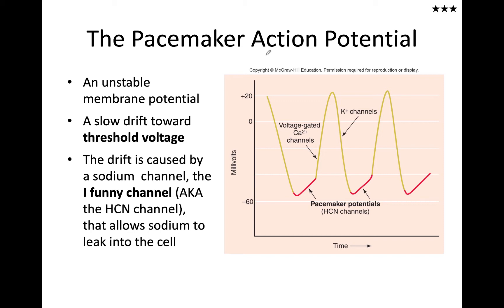The rhythm of the AV node, in the absence of any other stimulation, would cause the ventricle to beat at about 50 or 60 beats per minute. And in the absence of any other stimulation, the Purkinje fibers would cause the heart to beat at about 30 to 40 beats per minute.